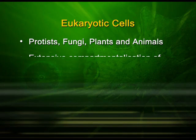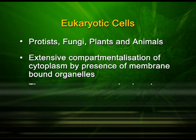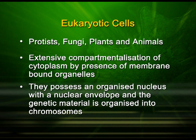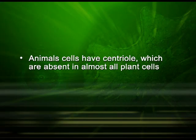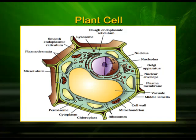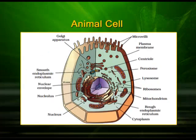Eukaryotic cells include all protists, fungi, plants and animals. They have extensive compartmentalization of cytoplasm by the presence of membrane-bound organelles. They possess an organized nucleus with a nuclear envelope, and the genetic material is organized into chromosomes. They also have a variety of complex locomotory and cytoskeletal structures. Eukaryotic cells of plants and animals differ: plant cells have cell walls, plastids and a large central vacuole, which are absent in animal cells. Animal cells have centrioles, which are absent in almost all plant cells. Notice in the plant cell: a large central vacuole, chloroplasts and the cell wall. In the animal cell, notice the presence of centrioles close to the nucleus.